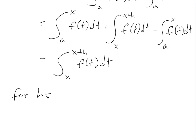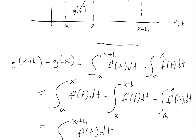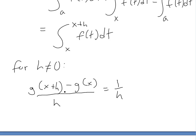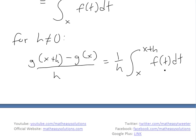Since h is not equal to zero, we can divide both sides by h. So we get g(x+h) minus g(x) divided by h equals one over h times the integral from x to x+h of f(t) dt. I'll show you why we use this form soon.